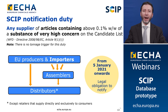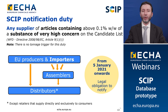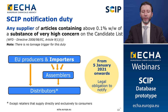Who has the duty to submit a SCIP notification? If you are a supplier of articles containing a candidate substance of very high concern on the candidate list in a concentration above 0.1% weight by weight, then you need to submit a SCIP notification to ECHA. Suppliers of articles are EU producers, importers, assemblers and distributors. Your obligation to submit a SCIP notification starts on the 5th of January 2021 onwards, at the time that you are supplying your articles or products to your customers.